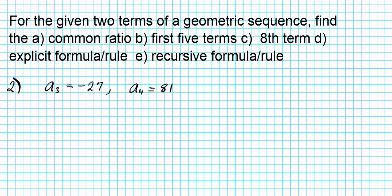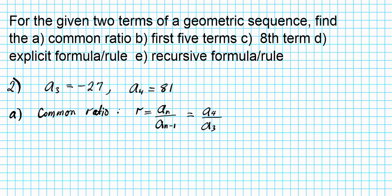Part A: find the common ratio. The common ratio R is determined by the formula Aₙ divided by the term before it. We have A4 and the term before it, A3, so we compute their quotient. A4 is 81 divided by A3 which is negative 27, giving us a common ratio of negative 3.